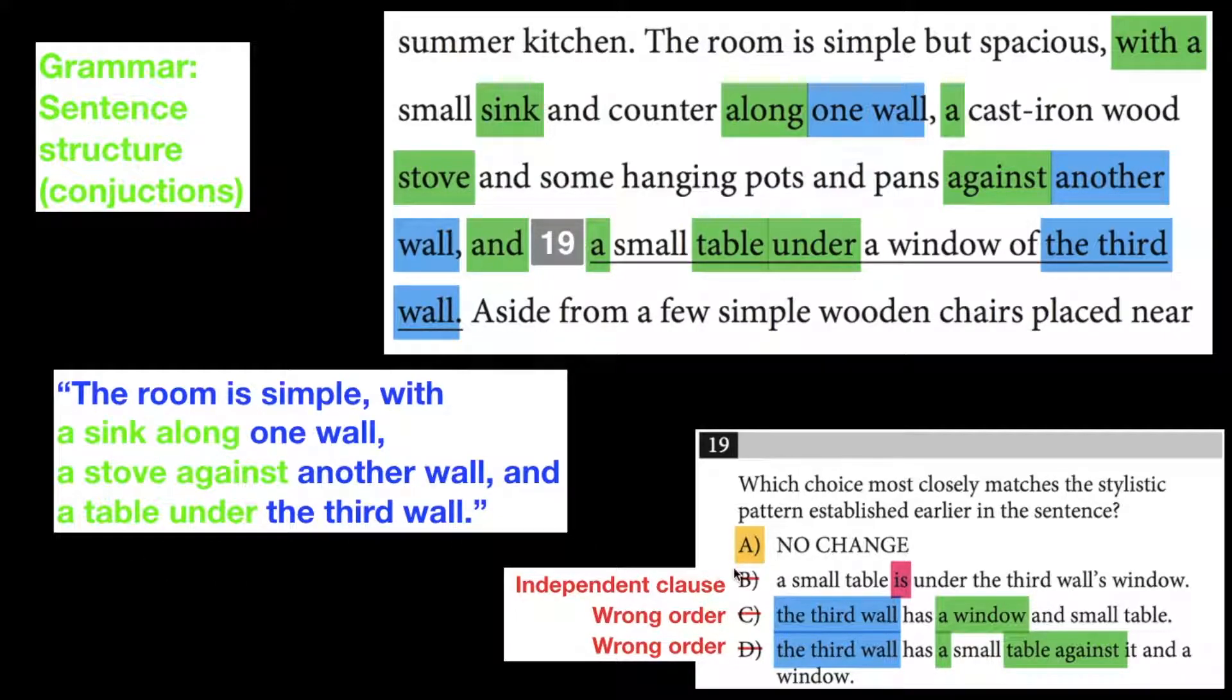And the green comes first, but then here the blues come first. We don't want to talk about the third wall first. We talk about a window, the wall. So it has to go green first, and then blue. And these C and D are in the wrong order. That's why A is correct.